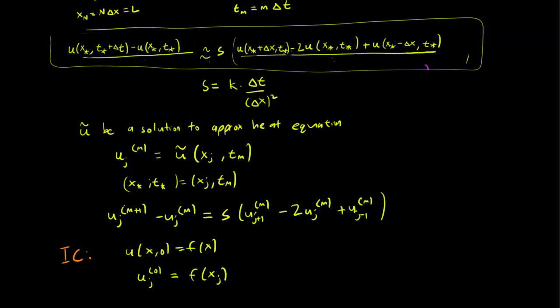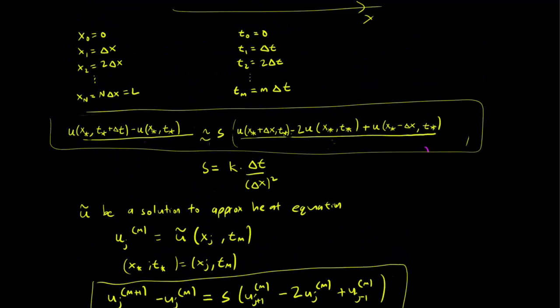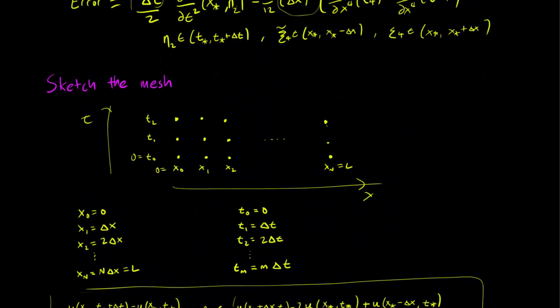And looking at our equation over here, if we know all the values for m equals 0, we can get the values for m plus 1. We can get the values for time 1. And once we have all the values for time 1, we can get the values for time 2. Once we get all the values for time 2, we can get the values for time 3 and so on. And this gives us approximate solutions for everywhere on this mesh.